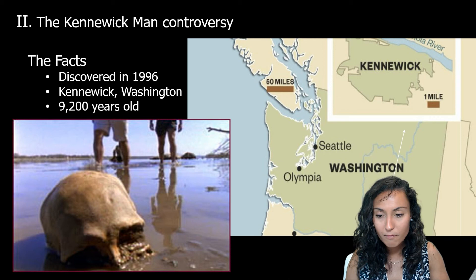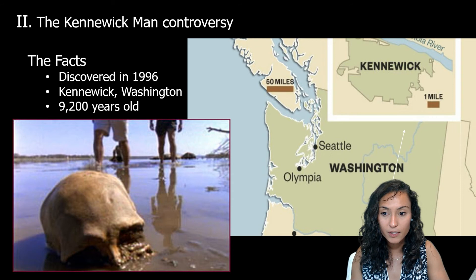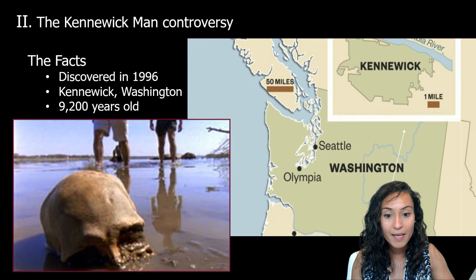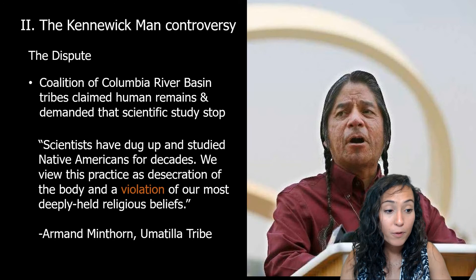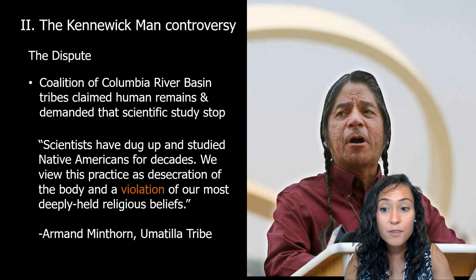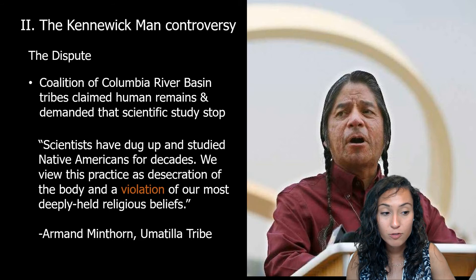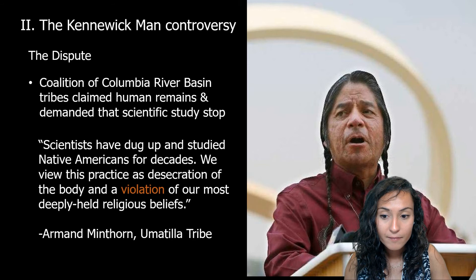In July of 1996, two college students stumbled on human remains that had washed up along the Columbia River near Kennewick, Washington. Subsequent forensic testing revealed that the bones were more than 9,000 years old. The skeleton, known as Kennewick Man, was 90% complete and represents a male standing about 5 foot 8 inches tall and weighing roughly 170 pounds. A storm of controversy erupted when the Army Corps of Engineers, which managed the land where the bones had been found, claimed authority over Kennewick Man and demanded that all scientific study cease. At the same time, a coalition of Columbia River Basin Indian tribes claimed the skeleton under the Native American Graves Protection and Repatriation Act, demanding that the remains be handed over for reburial.